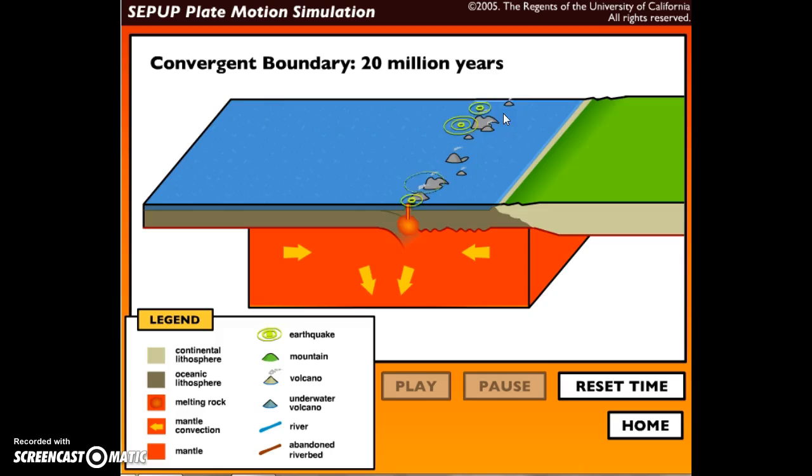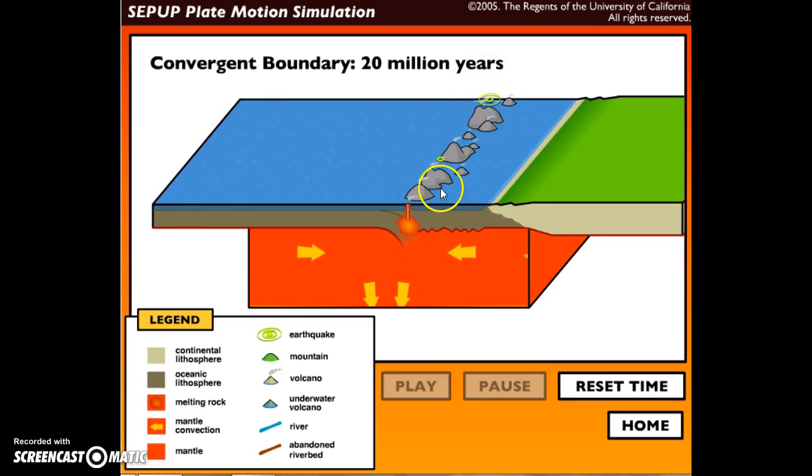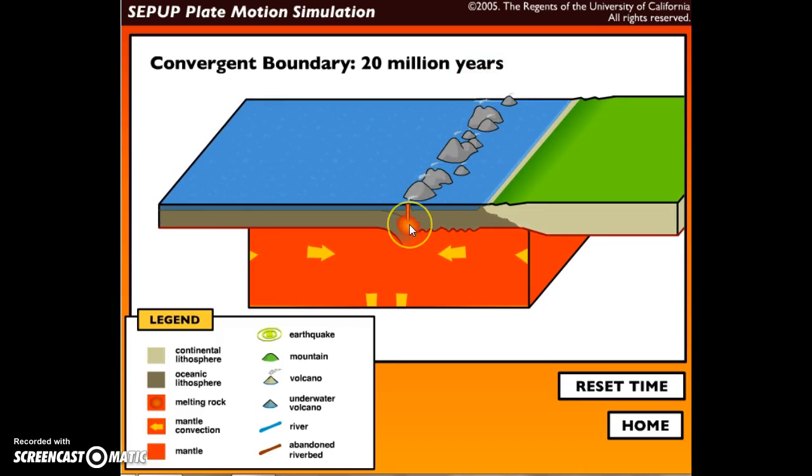We see earthquakes also occurring along where those two boundaries. You also see melting rock has occurred right where the two oceanic crusts have collided. Be sure you've listed all of the geologic features and events on your notes page.